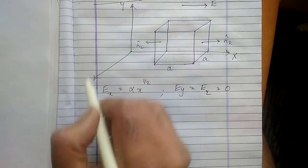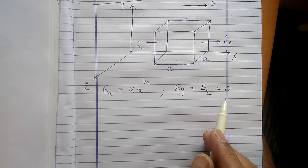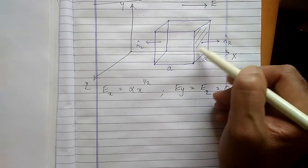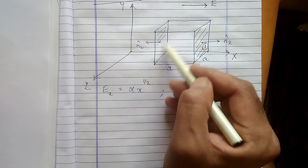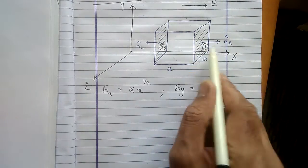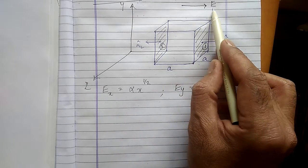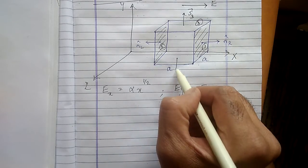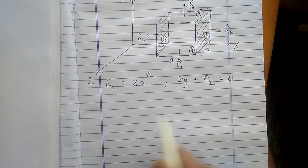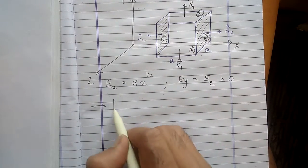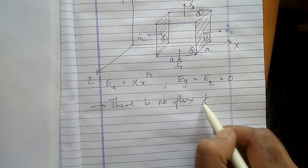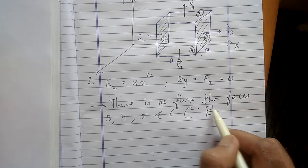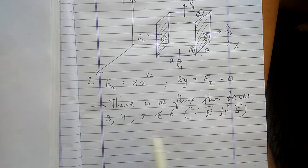Since E⃗ is along X only, through faces 3, 4, 5, and 6 the electric field is perpendicular to the area vector S⃗, so the flux through those faces is zero. Only through faces 1 and 2 — the faces perpendicular to the X-axis — will electric flux be linked. Let me note: there is no flux through faces 3, 4, 5, and 6 since E⃗ ⊥ S⃗.